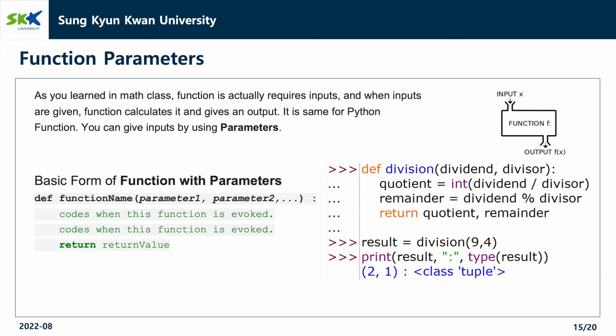As you learned in math class, a function actually requires inputs. And when inputs are given, the function calculates and gives an output. It is the same for Python functions. You can give inputs by using parameters. The function format is the addition of parameters next to the name. In the example on the right, the function division has two parameters, dividend and divisor.